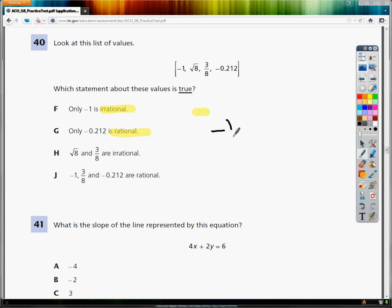Negative 1 makes a perfect fraction, negative 1 over 1. So negative 1 over 1 is rational.